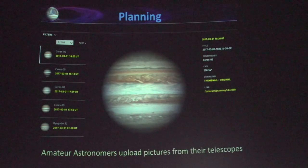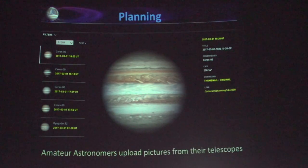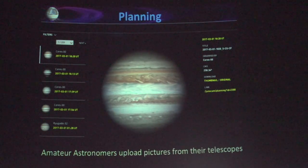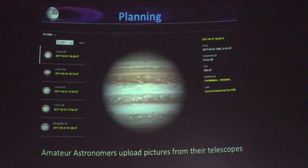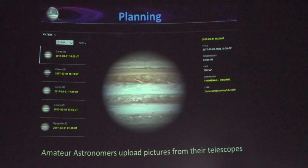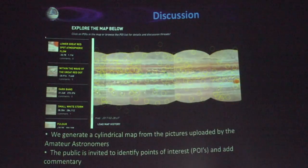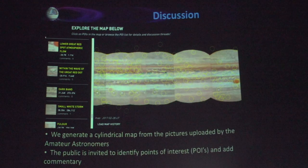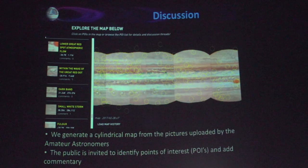This is a picture taken by a contributor called Series 00, who I actually happen to know is Christopher Goh, and he's in the Philippines. We have the data of what Jupiter looked like on that particular day. We collect the data for two-week intervals, and then we create a cylindrical map out of those pictures — the cylindrical map is what you see here.